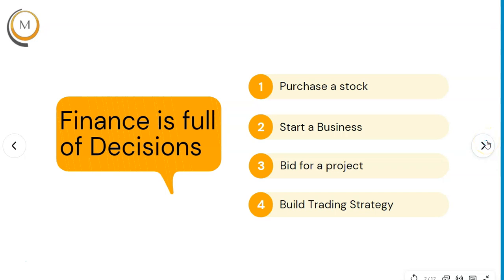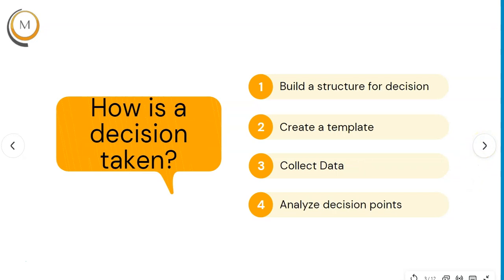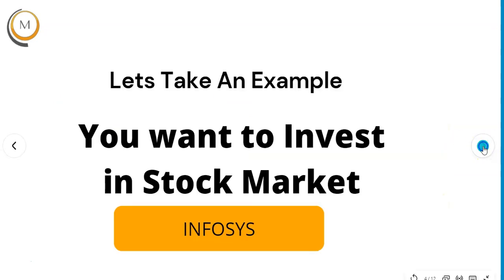Let's start with what exactly is a decision. Finance is full of decisions — some examples include purchasing a stock, starting a business, starting a project within an existing business, or building a trading strategy. All four examples are related to taking financial decisions. From a common sense perspective, you build a structure for the decision, create an Excel template for the decision process, collect data and make assumptions, and finally analyze the decision points to take a decision.